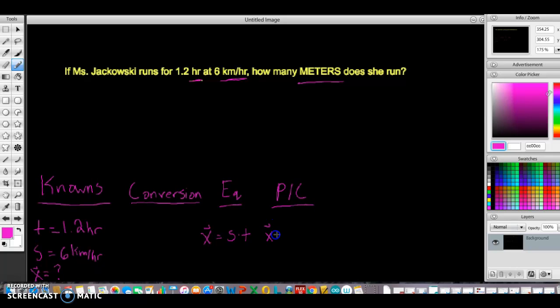X equals the speed, 6 kilometers per hour, times 1.2 hours. And our answer is going to be 6 times 1.2. That is 7.2.